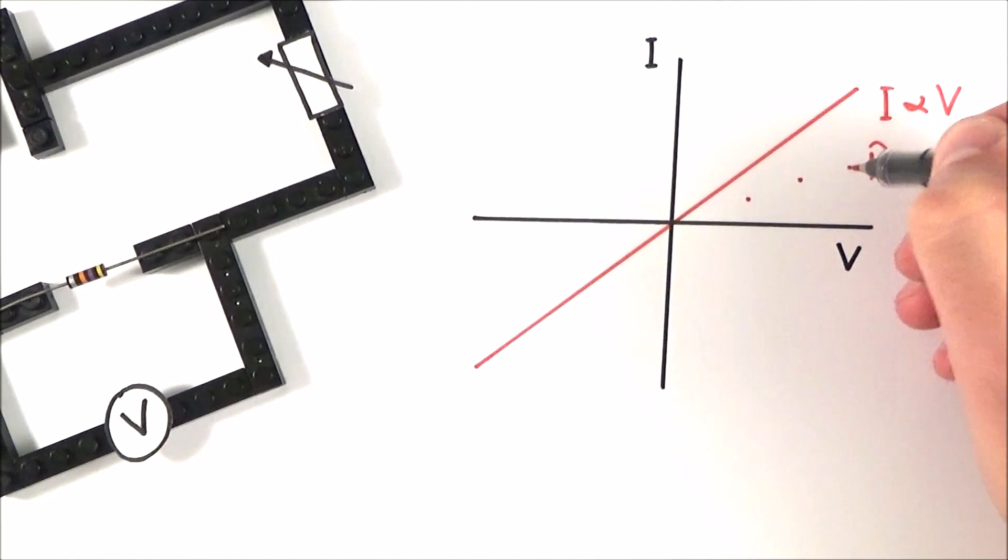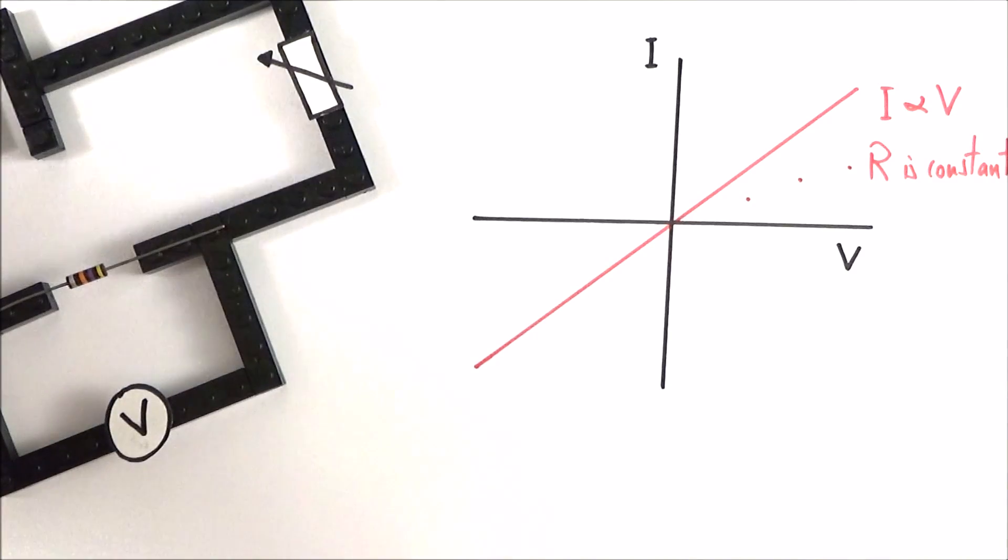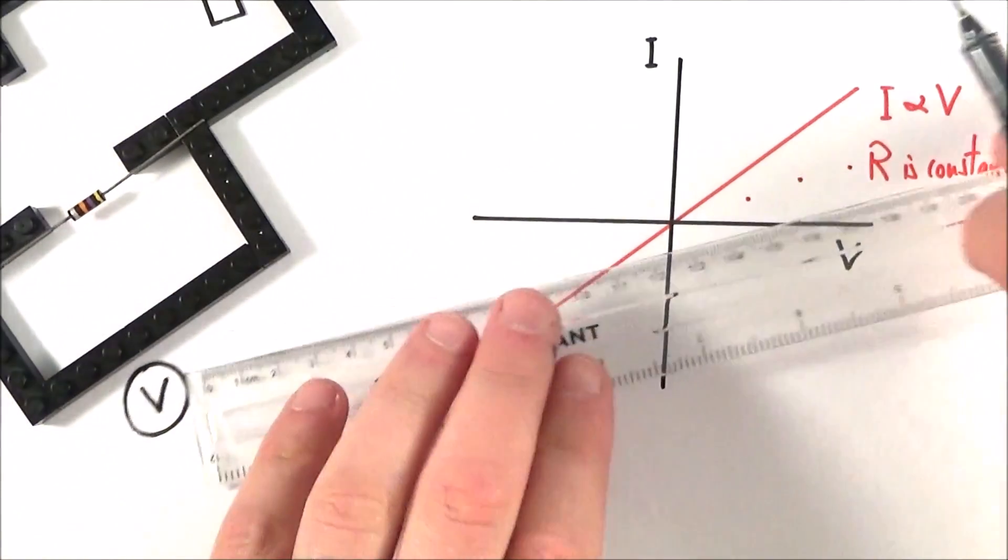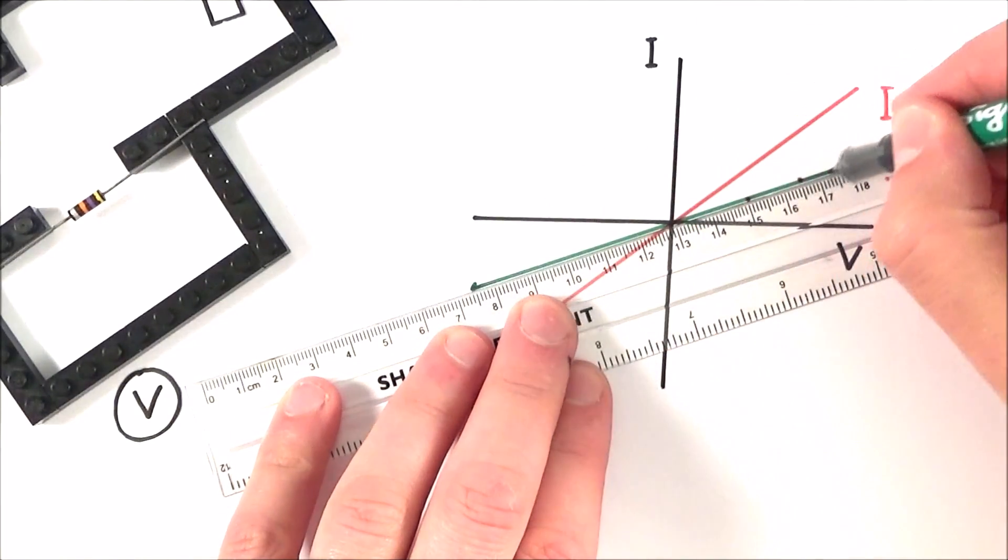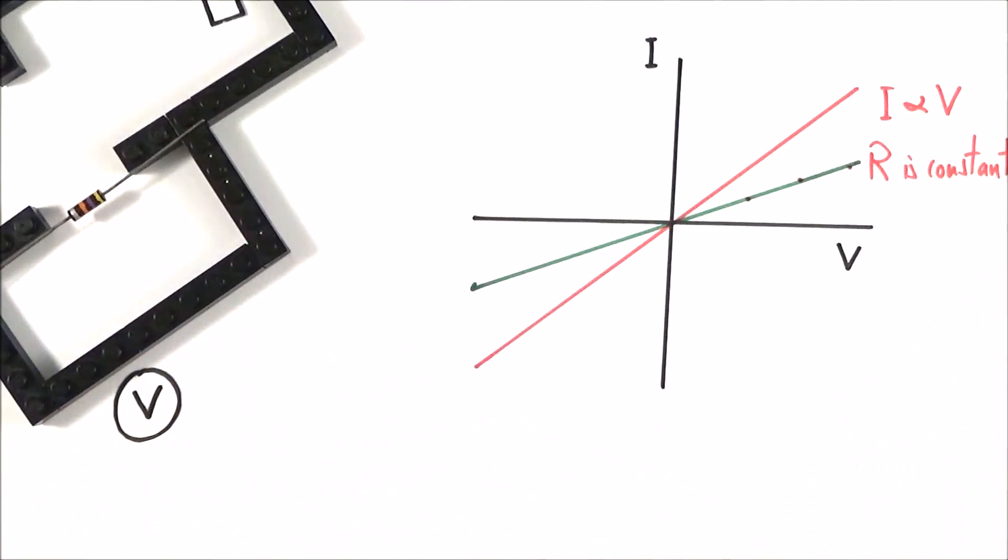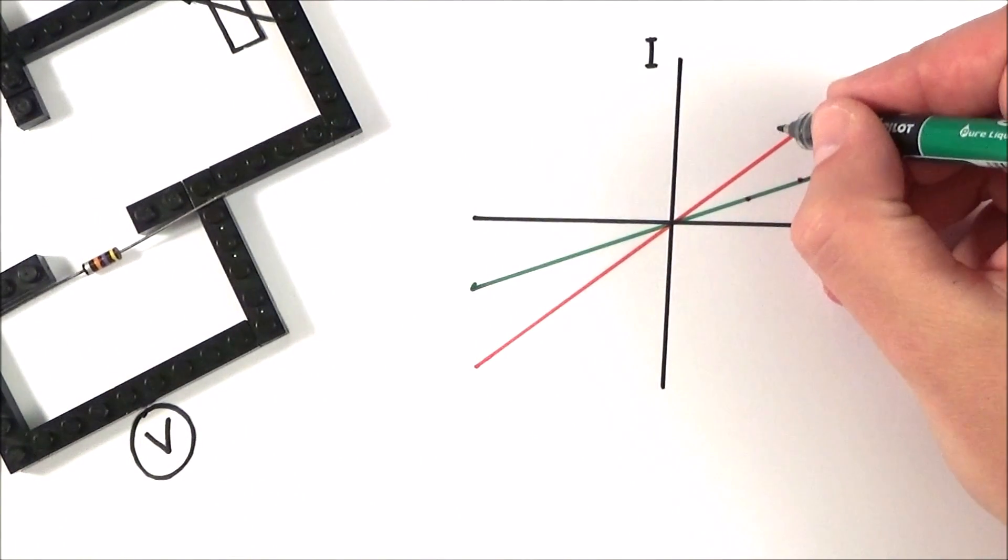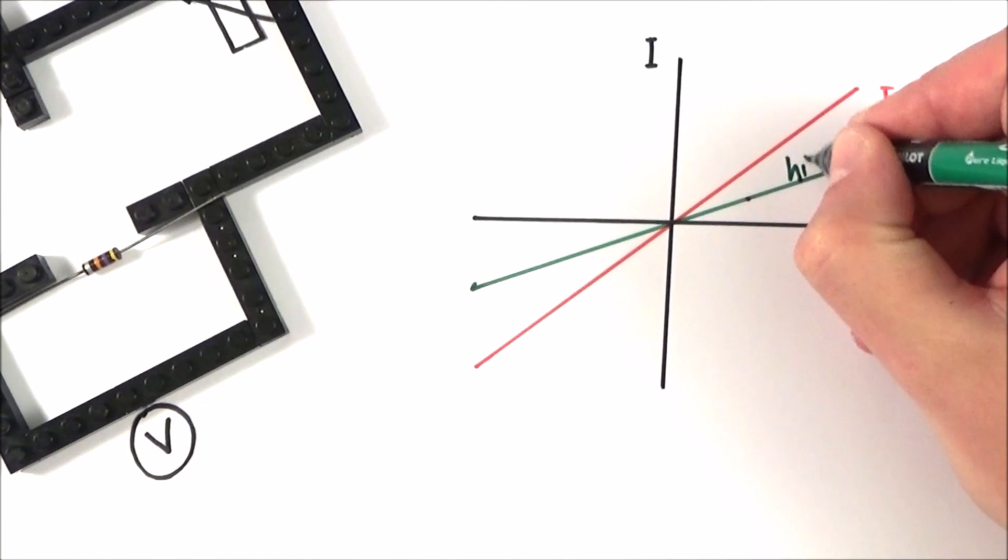If you have a resistor that has maybe a higher resistance, what we tend to find is that it has a lower graph or a lower gradient on the graph. So what we have here then, I'll just move that back, is here we have maybe a low resistance and here we have a high value of resistance.